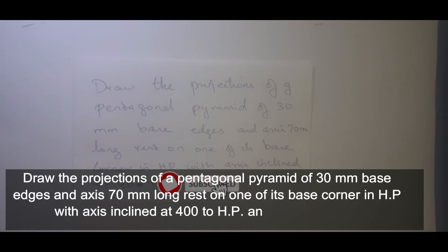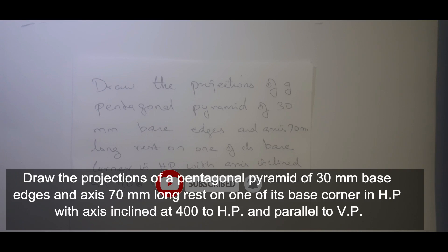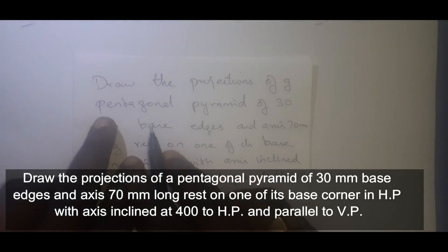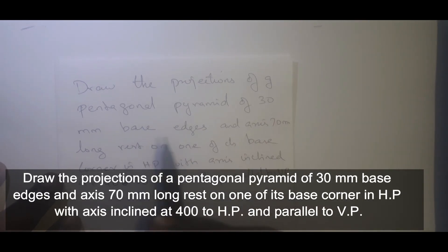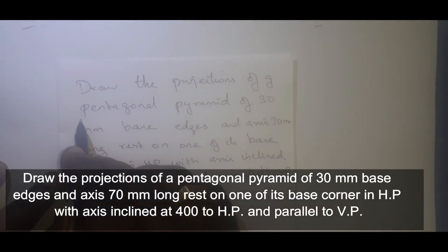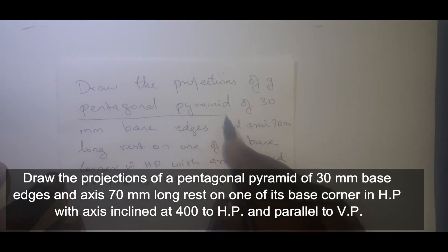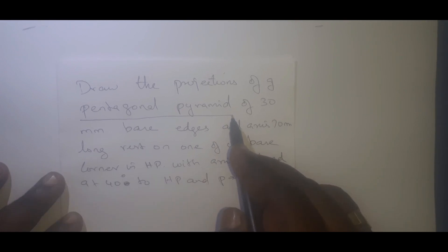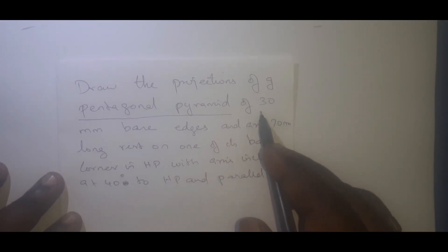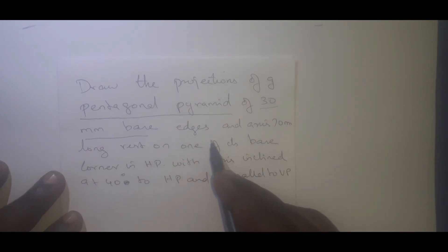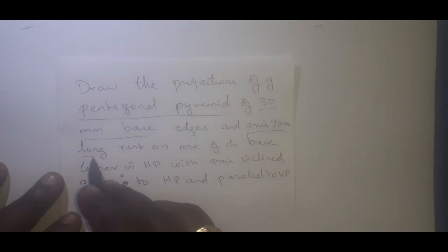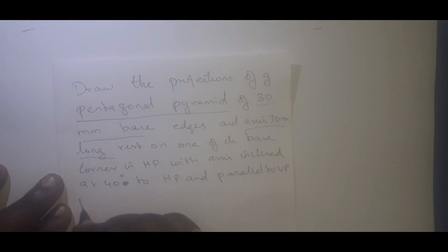Hello students. We can see one of the projections of solids problem in Unit 3. Look at the question: draw the projection of a pentagonal pyramid. This is a pentagon in shape and it is a pyramid. The dimension is clear now — 30mm base side edge and axis is 20mm long.